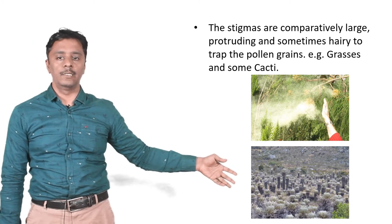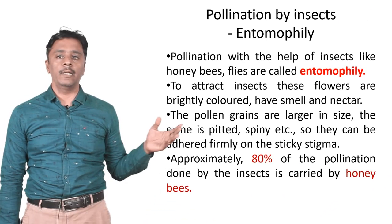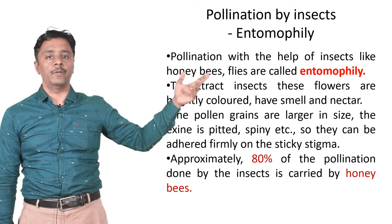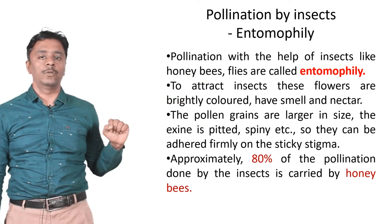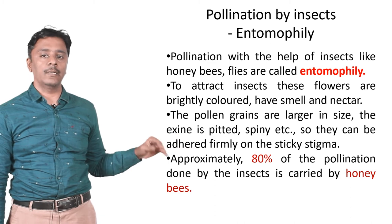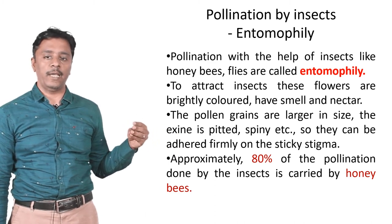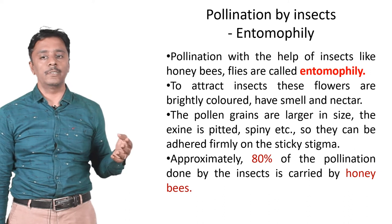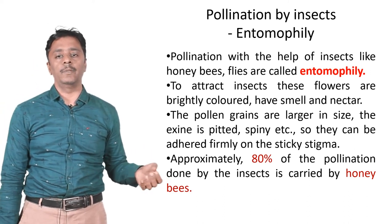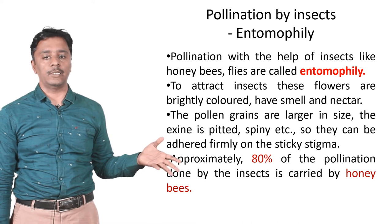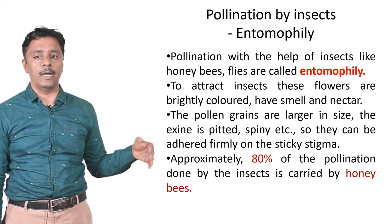The next one is pollination by insects, called entomophily — pollination with the help of insects like honeybees and flies. To attract insects, these flowers are bright in color and have sweet-smelling nectar. The pollen grains are large in size and are spiny so they can adhere firmly on the sticky stigma. Approximately 80% of the pollination done by insects is carried by honeybees.